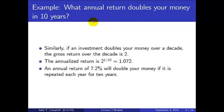Here's another example: what annual return doubles your money over 10 years? If the investment doubles your money over a decade, the gross return over the whole decade is 2. To annualize, we take the 1/10th power: 2^(1/10) = 1.072. So an annual return of 7.2% will double your money if repeated each year for 10 years. Without compounding you might think 10% per year is needed, but it's only 7.2%.